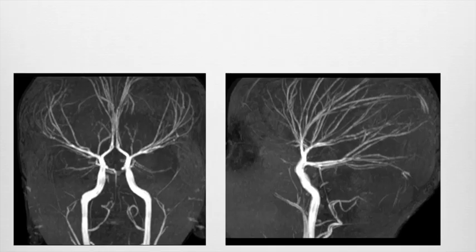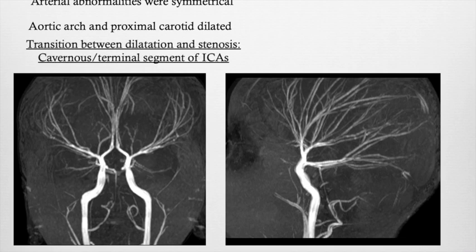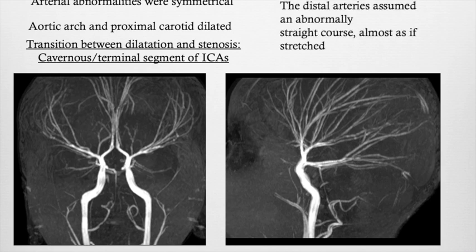The neurovascular phenotype in ACTA2 is characterized by symmetrical arterial dilatation of the aortic arch and of the proximal carotid arteries. There is then a transition between dilatation and stenosis at the level of the transition between the cavernous and the terminal segment of the ICA. The distal arteries assume, as you can see in these two MRA images, an abnormally straight course, almost as if stretched.